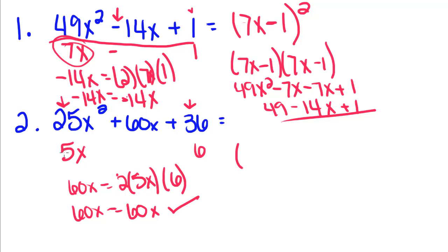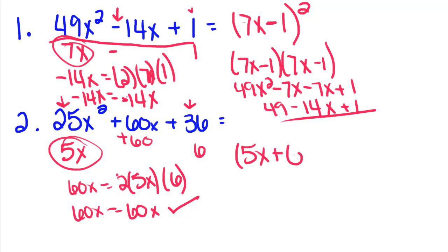Now we take a, which is 5x, plus — since this is a positive 60 in the middle — the square root of b squared, which is 6, squared. That's all we're doing with perfect square trinomials. Make sure you come back and watch the next lesson where we're going to learn how to factor normal trinomials that don't follow a special rule.